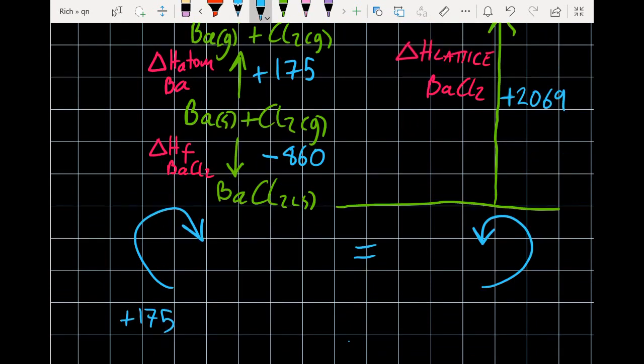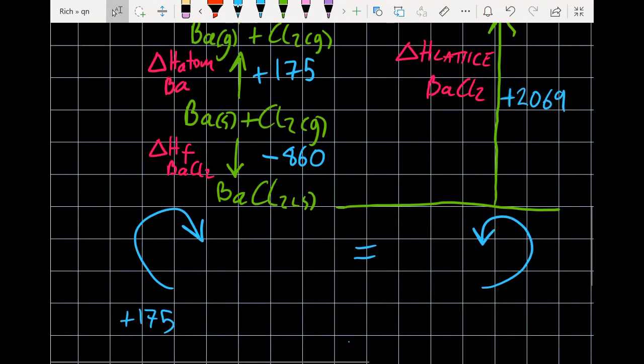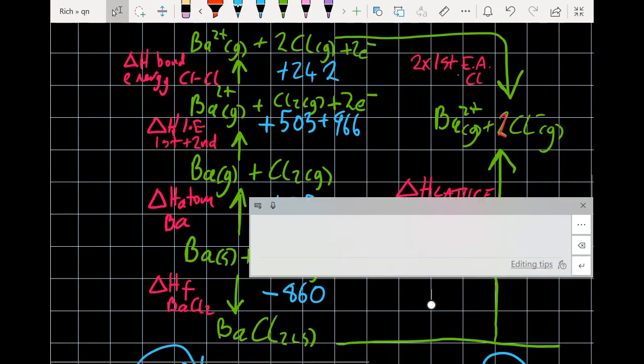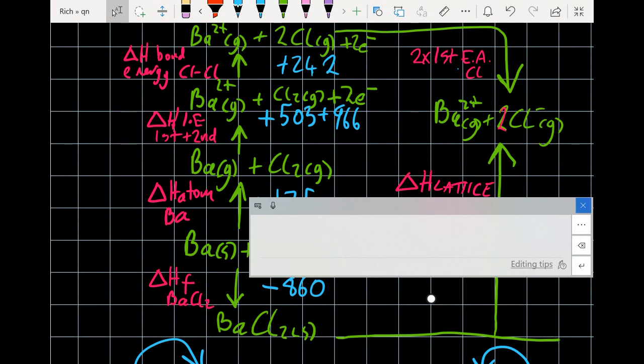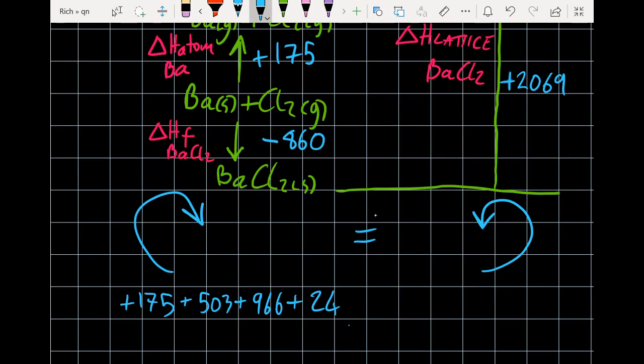So let me add up the clockwise arrows. So my clockwise arrows are plus 175, plus 503, plus 966, plus 242, plus twice my unknown, which is the first electron affinity of chlorine. Let's look at the anti-clockwise arrows. The arrows going the other way. That one's going the other way, and this one here is going the other way. It's going to equal minus 860, plus 2069.